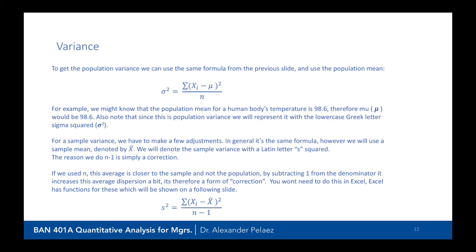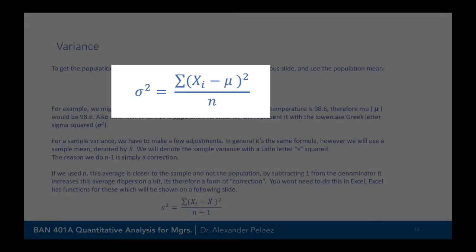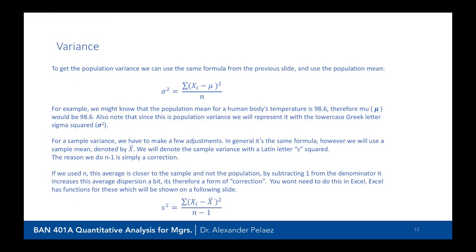For the population variance formula, we take each observation, subtract the population mean (μ), square it, add them all together, and divide by n. For example, knowing that the human body's average temperature is 98.6°F gives us a population mean. When we use that, we're computing a population variance, which is denoted as σ² (sigma squared).